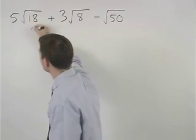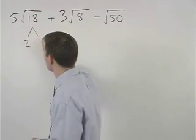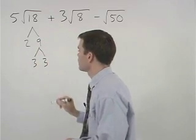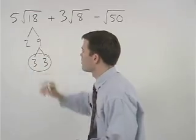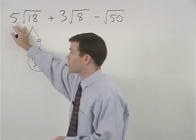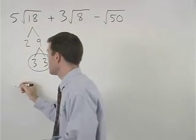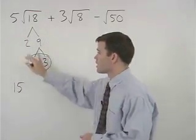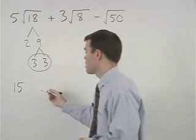18 is 2 times 9, and 9 is 3 times 3. So a 3 will come out of the radical, which multiplies times the 5, and we have a 15 on the outside, and on the inside we're left with the 2 that did not pair up.